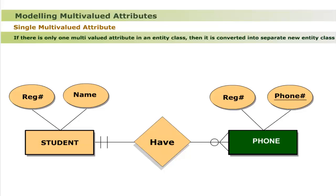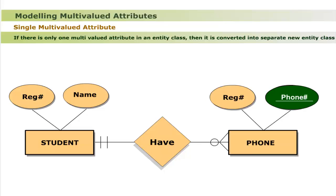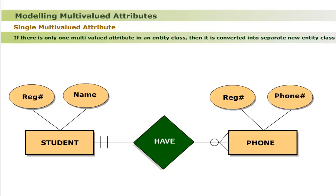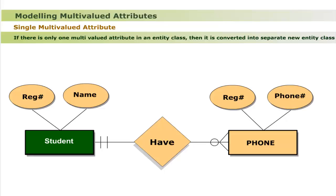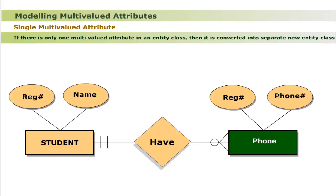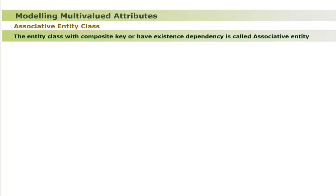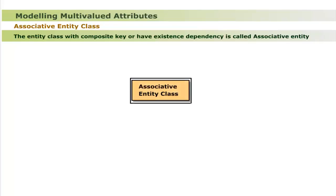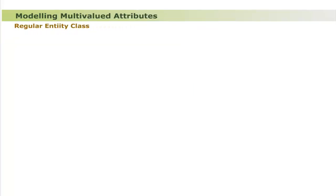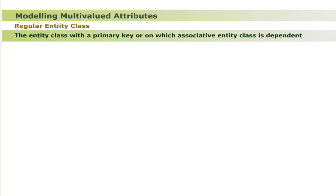The newly created entity class 'phone' has two attributes: registration number and phone number, both collectively forming a composite key. The relationship 'have' is established between the original entity class Student and the newly created entity class Phone. This modeling introduces new types of entity classes: the associative entity class (also called weak entity class) has a composite key or existence dependency and is represented by a rectangle with double lines; the regular entity class has a primary key and is the one on which the associative entity class depends.